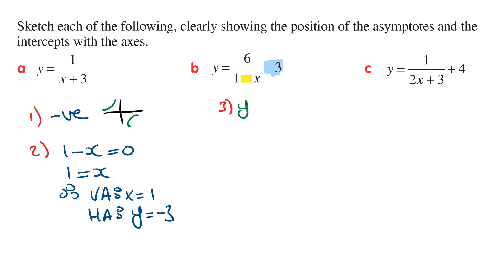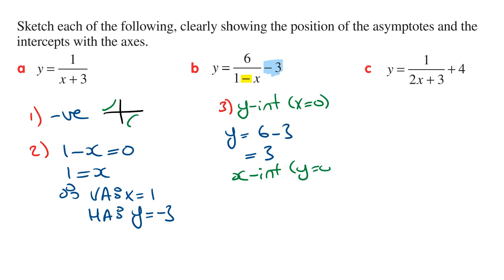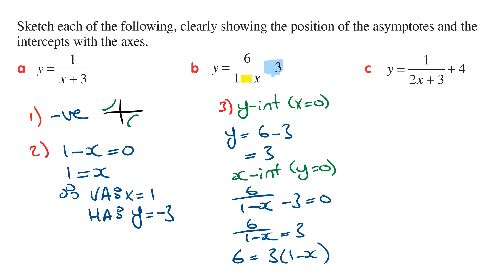For the y intercept, we let x equal 0. So y is going to be 6 on 1 minus 0, which is 6 on 1, minus 3, which equals 3. So the y intercept is 3. For the x intercept, we let y equal 0, giving 6 over 1 minus x minus 3 is equal to 0. Taking minus 3 to the other side gives 6 over 1 minus x is equal to 3. Multiplying both sides by 1 minus x gives 6 is equal to 3 times 1 minus x. Expanding: 6 is equal to 3 minus 3x. Solving for x: 3x equals 3 minus 6, which is minus 3, so x is equal to minus 1. The x intercept is minus 1.